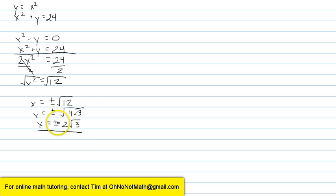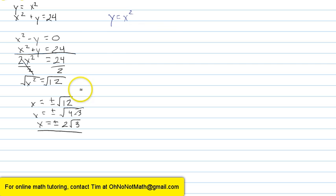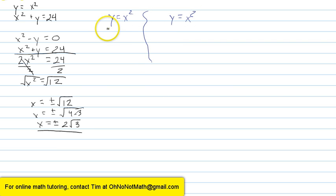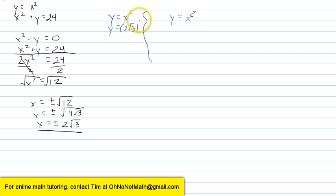Now I take those x values and substitute them into the first equation, y equals x squared. I'm going to do it for both values of x. For the first value, I'll substitute positive 2 times the square root of 3 in for x. I get y equals 2 times the square root of 3, all squared.